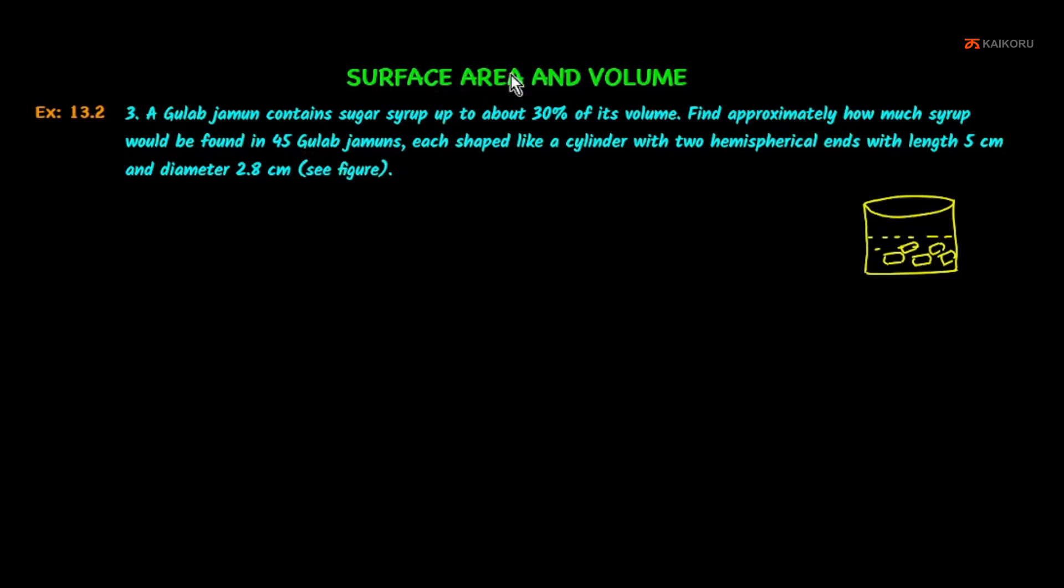Surface area and volume, Exercise 13.2, Problem number 3: A gulab jamun contains sugar syrup up to about 30% of its volume. Find approximately how much syrup would be found in 45 gulab jamuns, each shaped like a cylinder with two hemispherical ends with length 5 centimeters and diameter 2.8 centimeters.